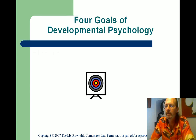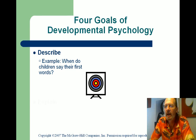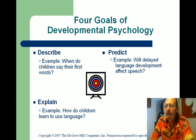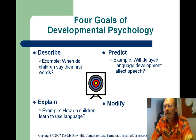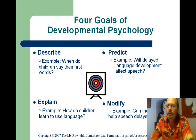Know the four main goals of psychology: to describe a behavior or phenomenon that's happening; explain why or how it happens; predict what might occur under different circumstances; and try to modify by explaining how all these things happen and what we can do to help change them.